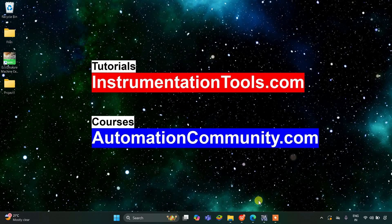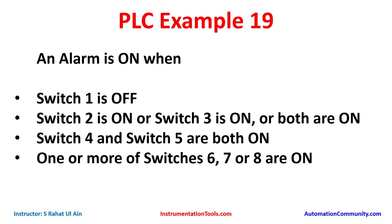Hello everyone, welcome to Automation Community. Today in this video we are going to discuss an example about controlling an alarm. Example 19: an alarm is on when switch 1 is off, switch 2 is on or switch 3 is on or both are on, then switch 4 and switch 5 are both on, and one or more of switches 6, 7, or 8 are on.